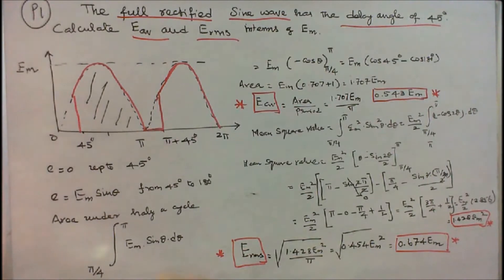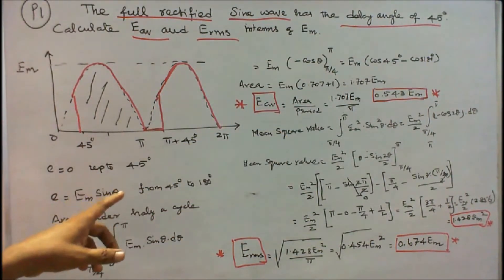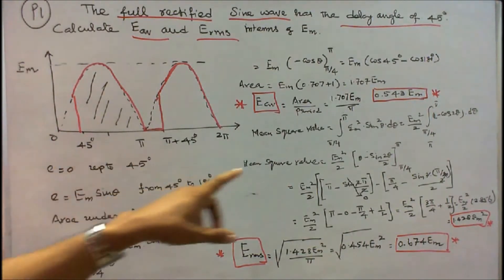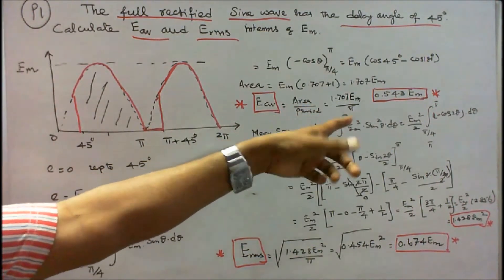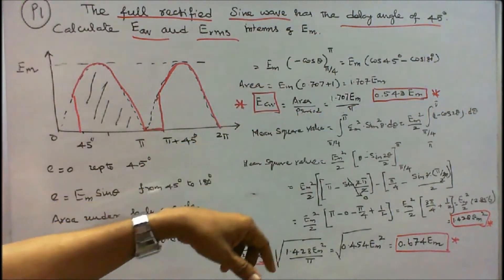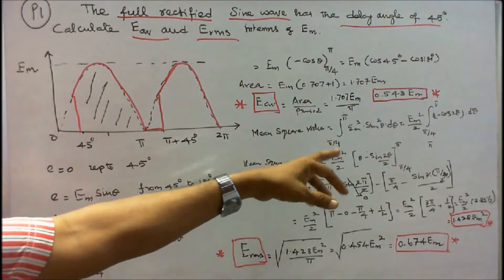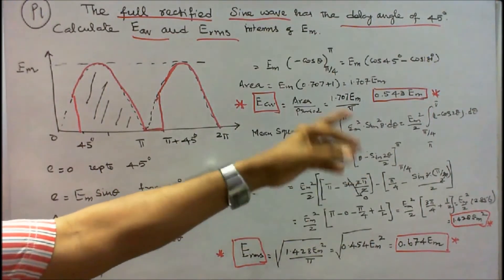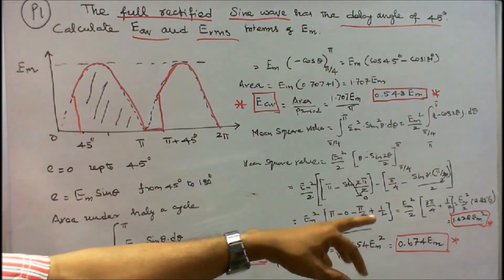Next, we find the mean square value. The mean square value is the integral from pi/4 to pi of EM squared times sine squared theta d-theta. Using the identity sine squared theta equals (1 minus cos 2-theta) divided by 2, the mean square value equals EM squared divided by 2, times (theta minus sin 2-theta divided by 2), evaluated from pi/4 to pi.